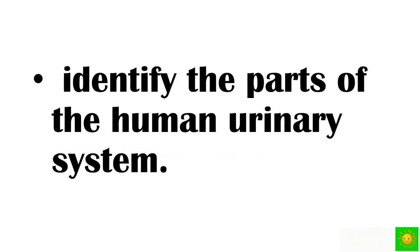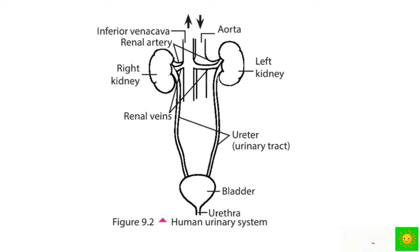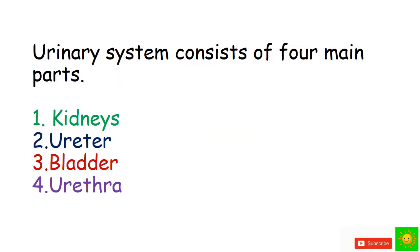Let's identify the parts of the human urinary system. The parts include the right kidney, left kidney, renal veins, ureter, bladder, and urethra. The urinary system consists of four main parts: kidneys, ureter, bladder, and urethra.